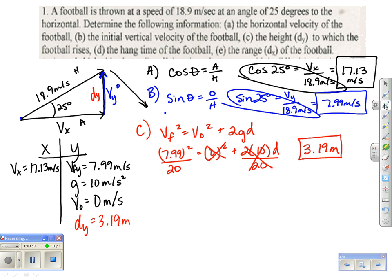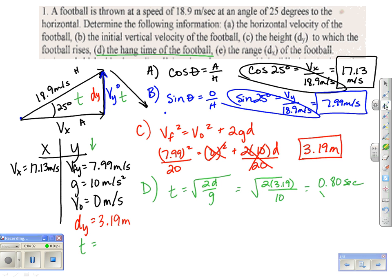Now Part D wants me to find my hang time. Hang time is the time it took to go up and the time it took to go down. Again, I like to talk about the downtrip. So I'm just going to use this information over here in the Y, and I'm only going to talk about the downtrip. So I can say t equals the square root of 2d over g. If that's the case, then I can now say the square root of 2 times 3.19 divided by 10, and I get an answer of 0.80 seconds. If that's the case, I'm going to have to multiply it by 2 to get my hang time because that's just the 1t. So then it would be 1.6 seconds.